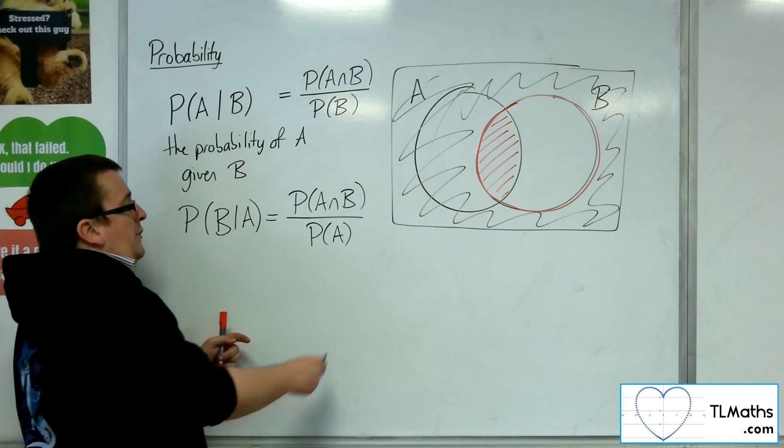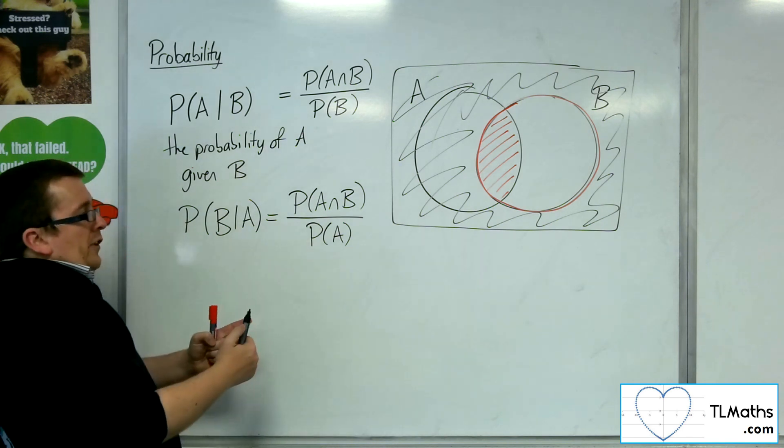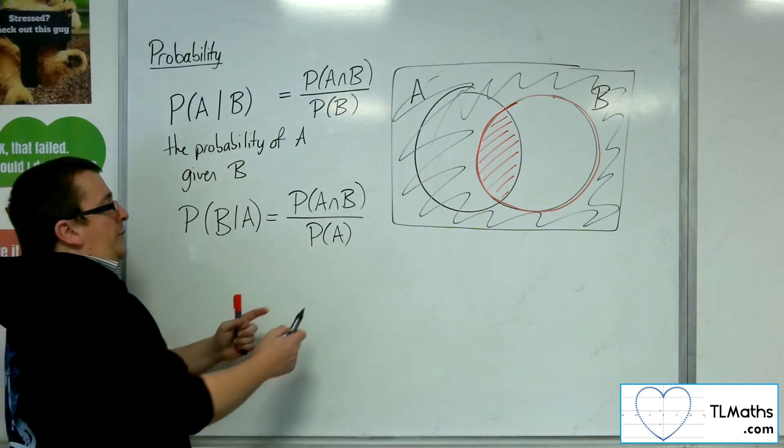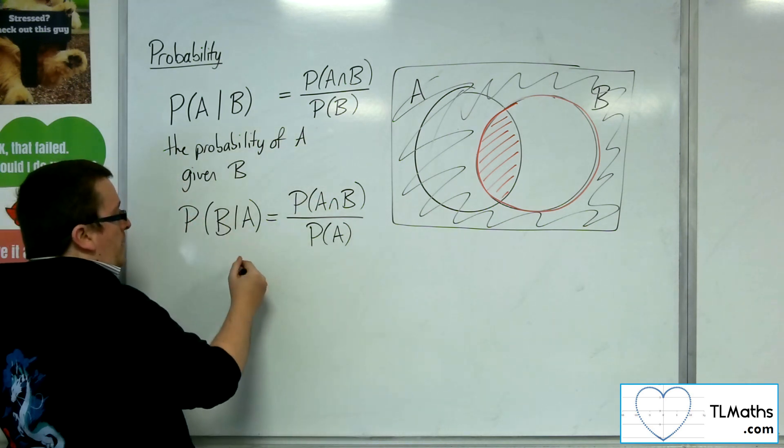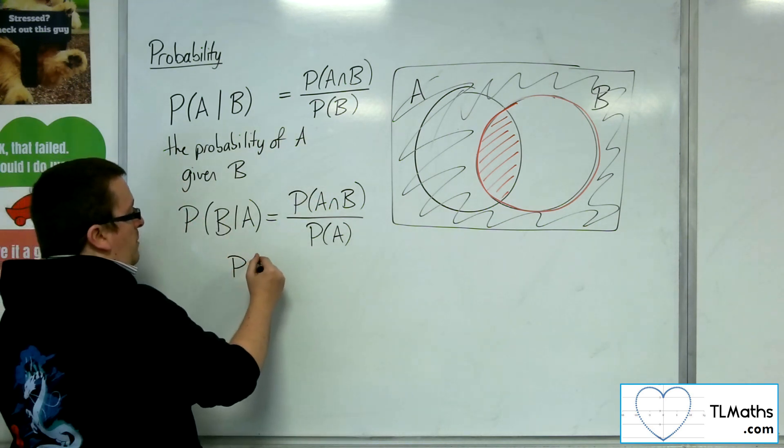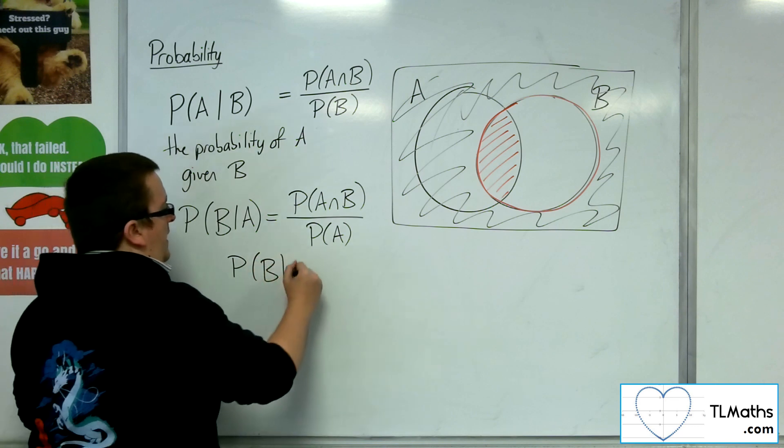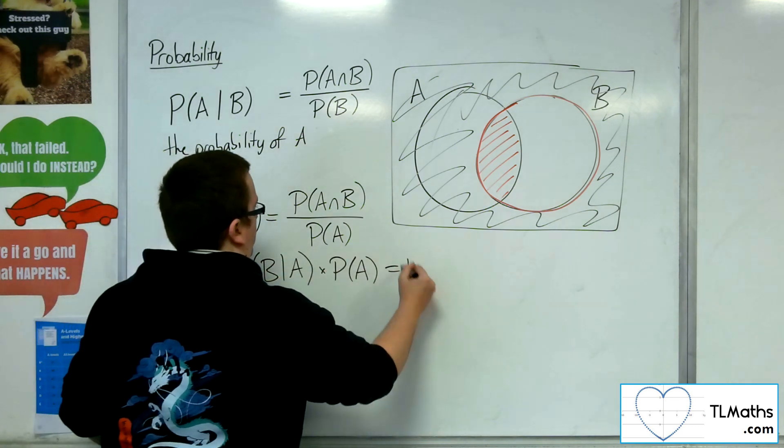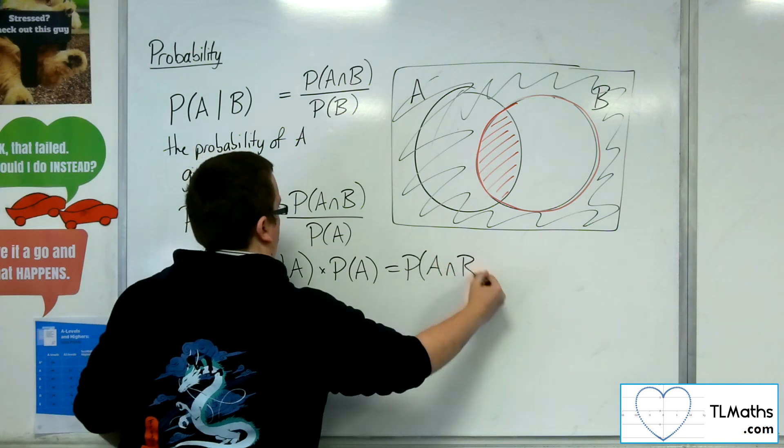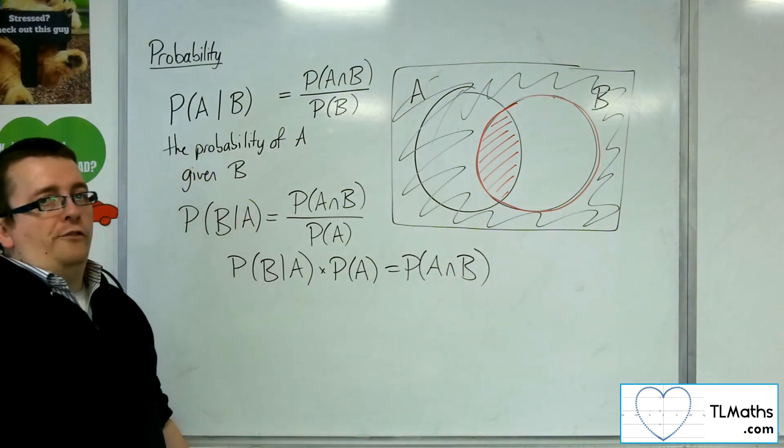And it's often written in a slightly different way. So it's often written with multiplying the probability of A multiplied up, so that it's written as the probability of B given A times the probability of A is equal to the intersection. It's quite often written that way.